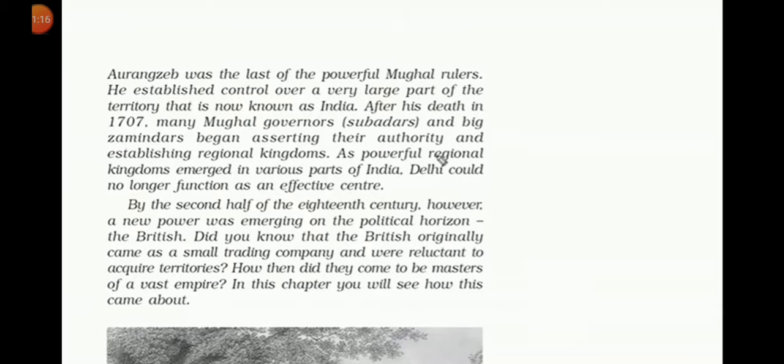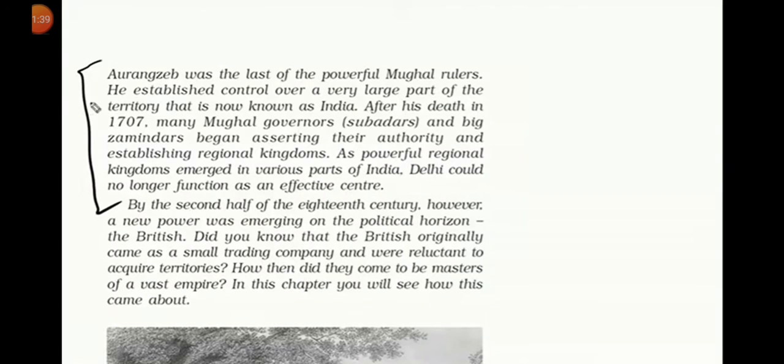By the second half of the 18th century, however, a new power was emerging on the political horizon — the British. Did you know that the British originally came as a small trading company and were reluctant to acquire territories? How then did they come to be masters of a vast empire? In this chapter you will see how it comes about and how the British were able to rule India.